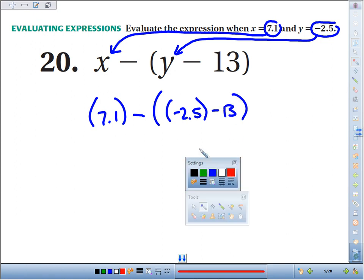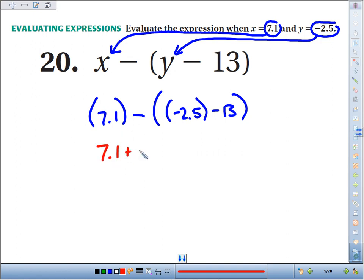If we think of these as addition problems, this subtraction is like adding the opposite. So I've got 7.1 plus the opposite of whatever's in this group of stuff. You've got negative 2.5 minus, or negative, however you think about it. Minus and negative are the same symbol. So we could think of this as adding a negative 13.